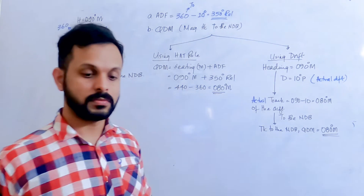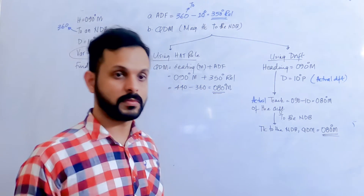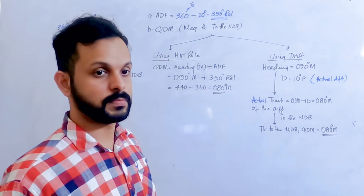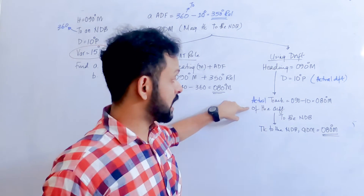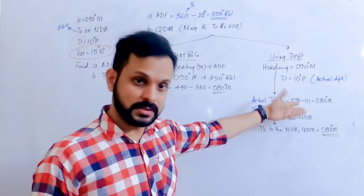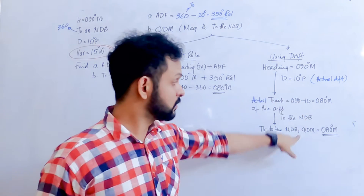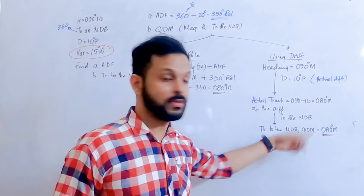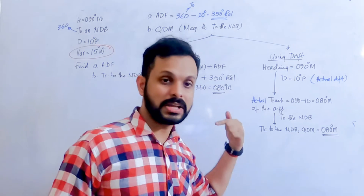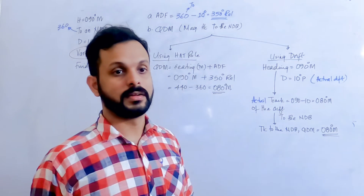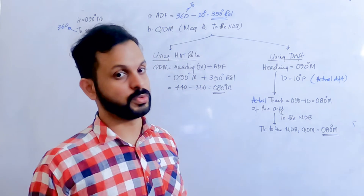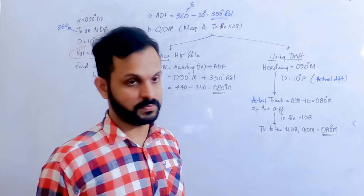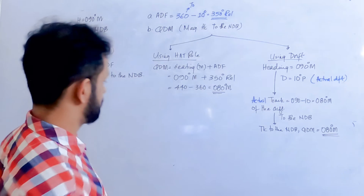If you're moving away from the NDB, the route of travel remains the same but your track to the NDB will be plus 180. So 80 plus 180 equals 260 degrees.